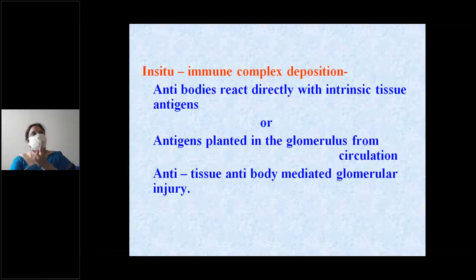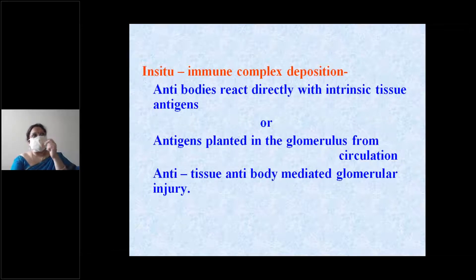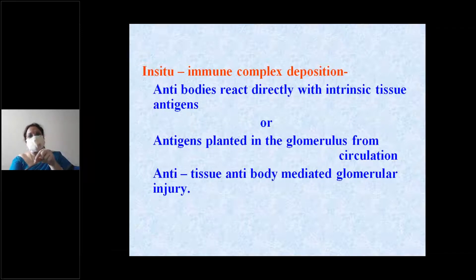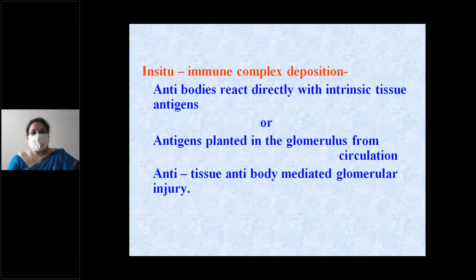In in-situ immune complex deposition, antibodies react against intrinsic tissue antigens — such as DNA or tumor antigens — causing antibody formation. Antigens can also be planted in the glomerulus from the circulation, where they evoke an antibody response, causing in-situ immune complex deposition.